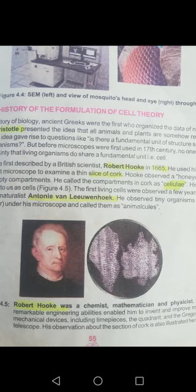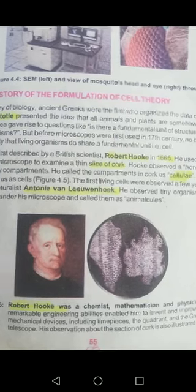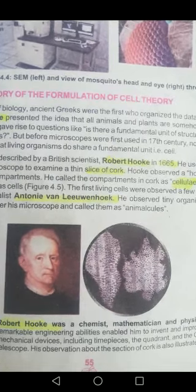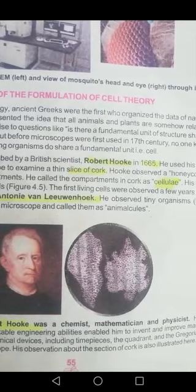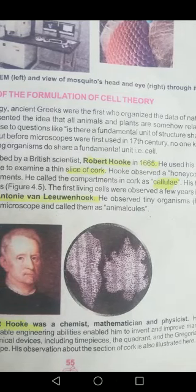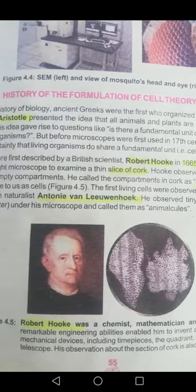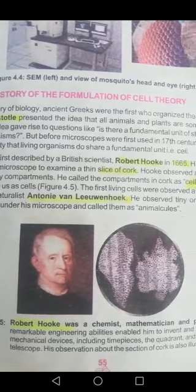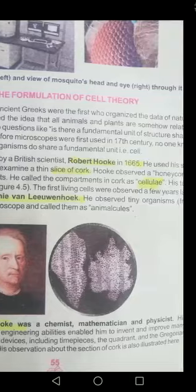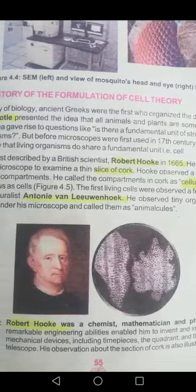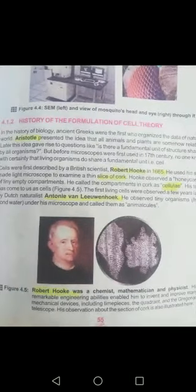There is some additional information about Robert Hooke: he was a chemist, mathematician, and physicist who discovered different instruments like the timepiece and the quadrant, and he also observed the slice of cork.